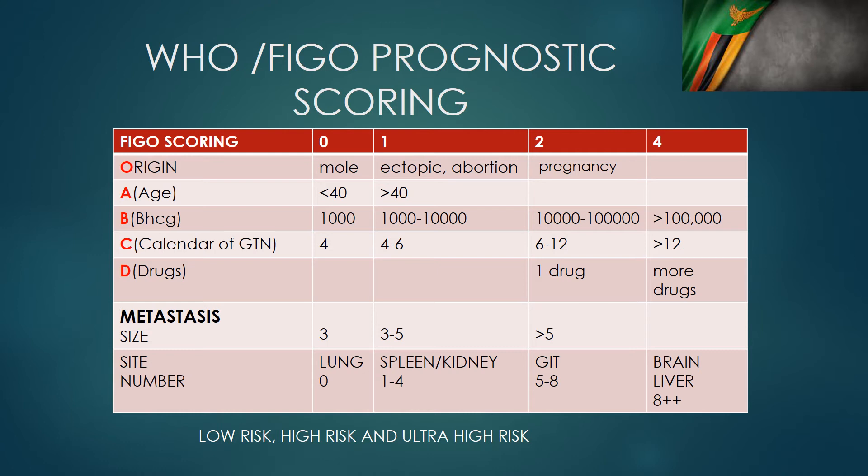Parameter D is Drugs — prior chemotherapy. If the patient has been treated with one drug before, they score two. If they've been on more than one drug previously, they score four.